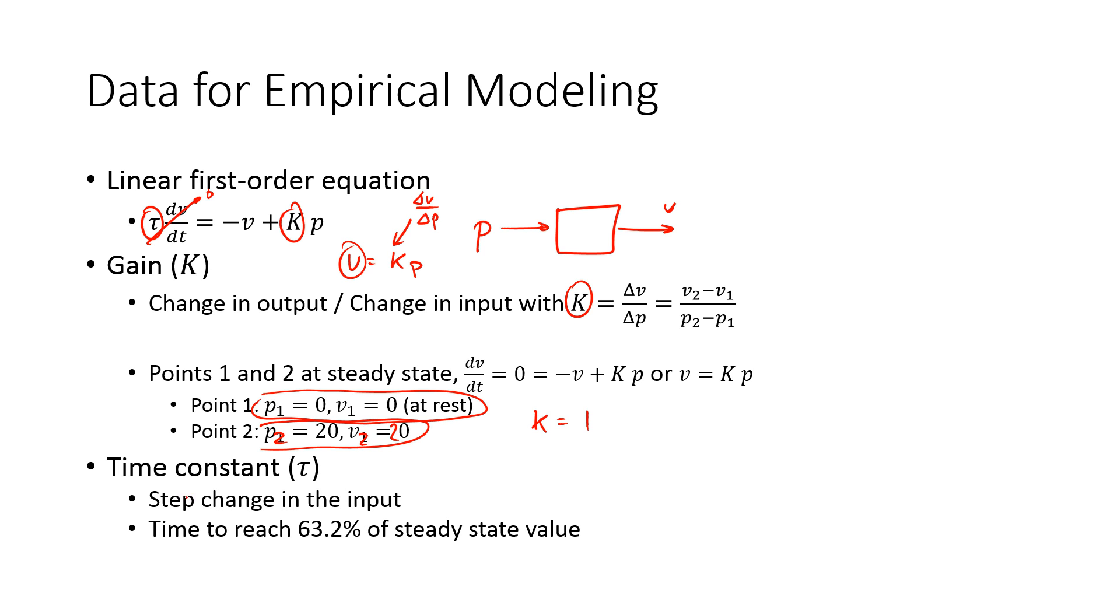Time constant, this is after a step change in the input, it's the time to reach 63.2% of the steady state value. So if we have a change, a step input, and let's say this is our value for p,